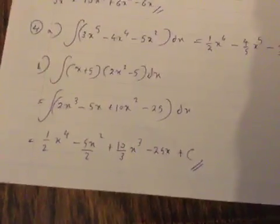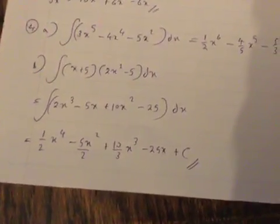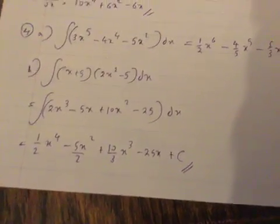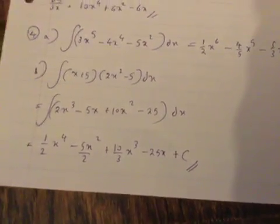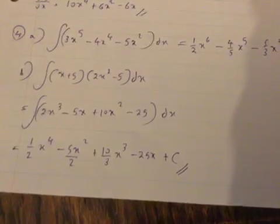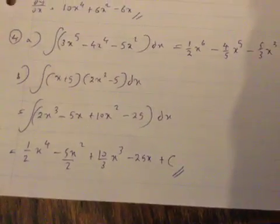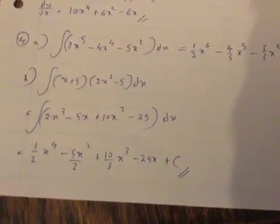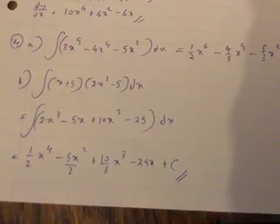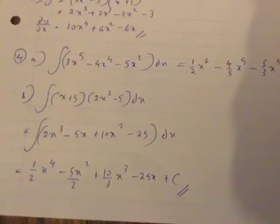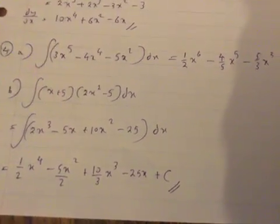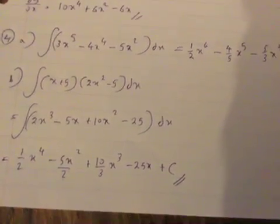Question 4b: integral of (x + 5)(2x² - 5) dx. First expand the brackets to get integral of 2x³ - 5x + 10x² - 25 dx, which integrates to half x⁴ minus 5 over 2 x² plus 10 over 3 x³ minus 25x plus c.